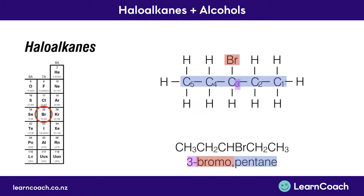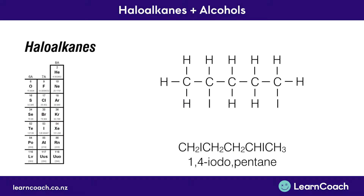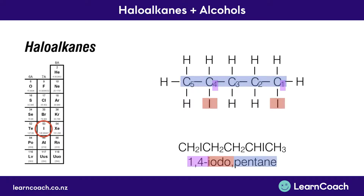Now we'll try another structure. Again we start by numbering our carbons — we've got five, so this is pentane. We've got two iodines, so it's iodo-. One of the iodines is attached to the first carbon and the other is attached to the fourth carbon, giving us 1,4-diiodopentane. That's how we name two haloalkanes in the same chain.